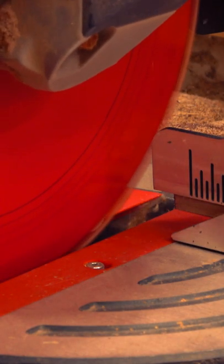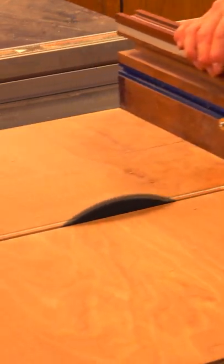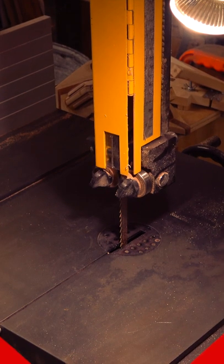Table saws and miter saws can actually grab onto dowels as well and send them flying. The truth is, bandsaws are probably the safest way to cut dowels, but you'll have to work with the laws of physics instead of against them.